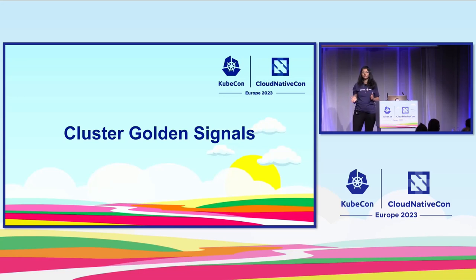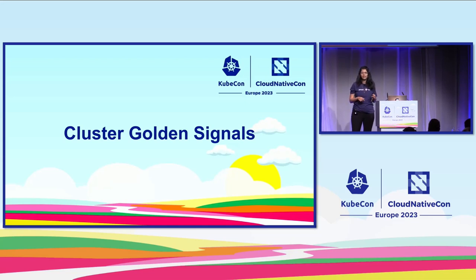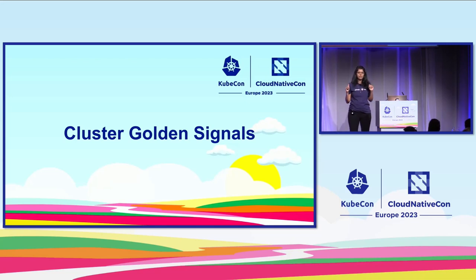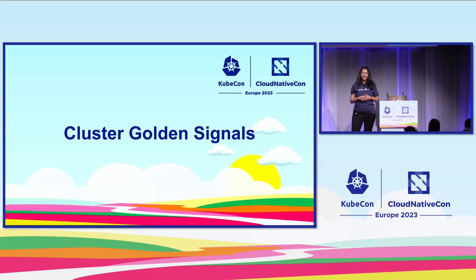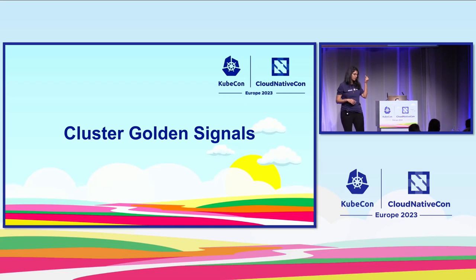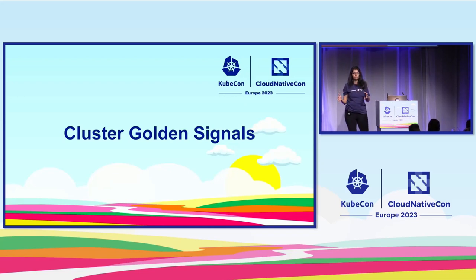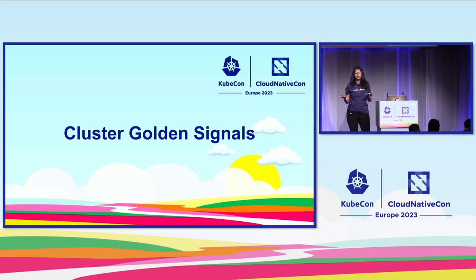Golden signals is not a new concept. The health of a service — whether it's a microservice on Kubernetes or elsewhere — can be determined using four high-level signals. The Google SRE Handbook released this a few years ago, describing four golden pillars: error rates, latency, saturation, and requests or traffic. With a few good signals across those four pillars, you can determine whether a service is healthy or not. We realized this applies to services — can we map it to Kubernetes clusters as well?